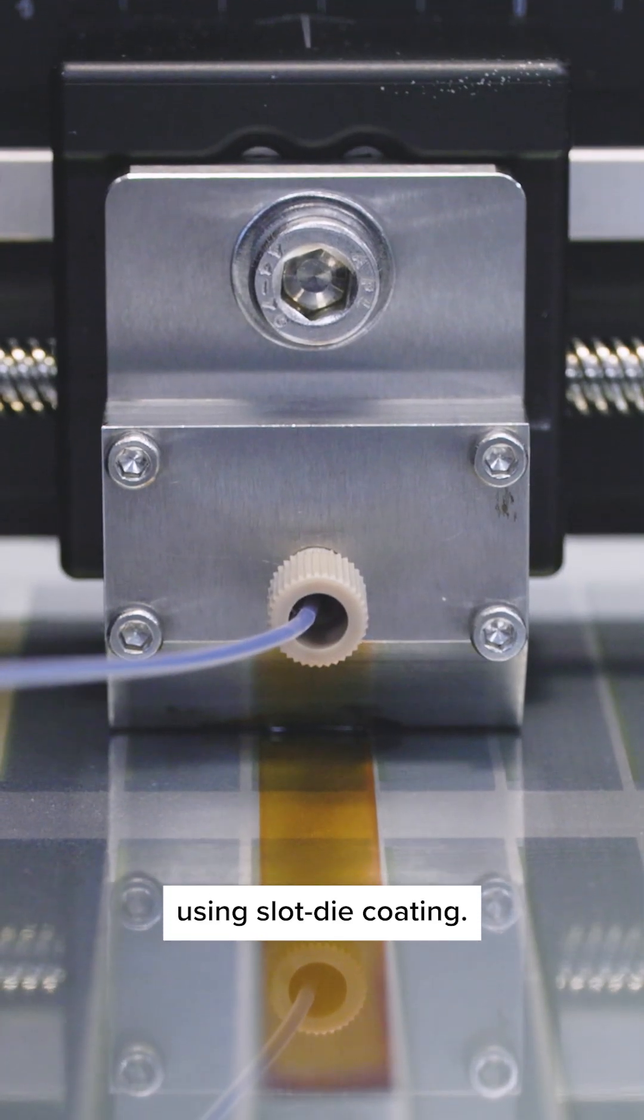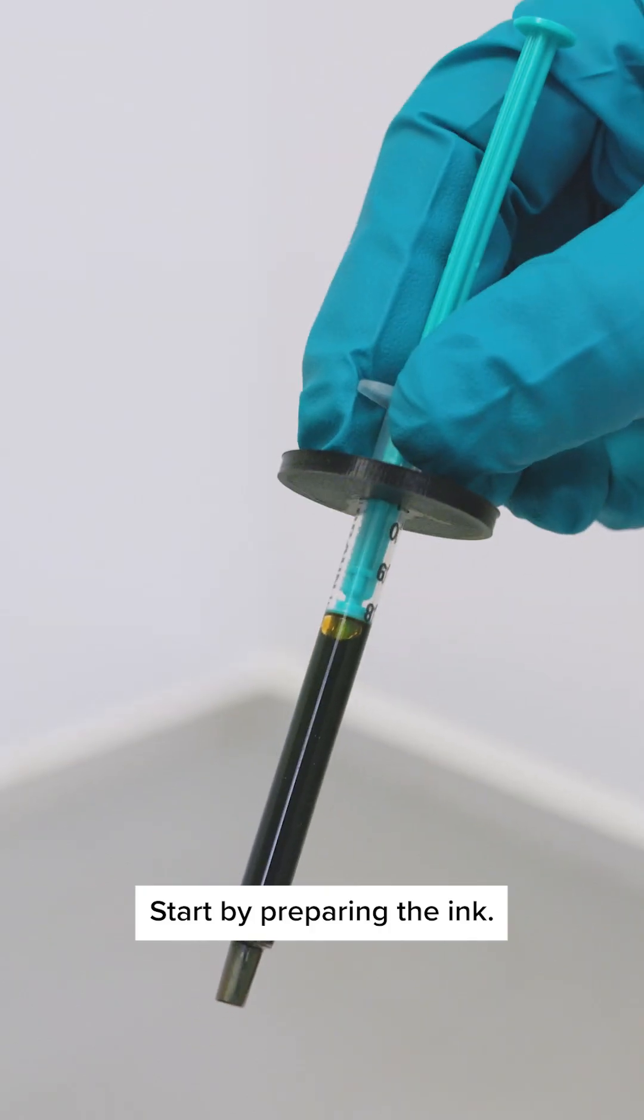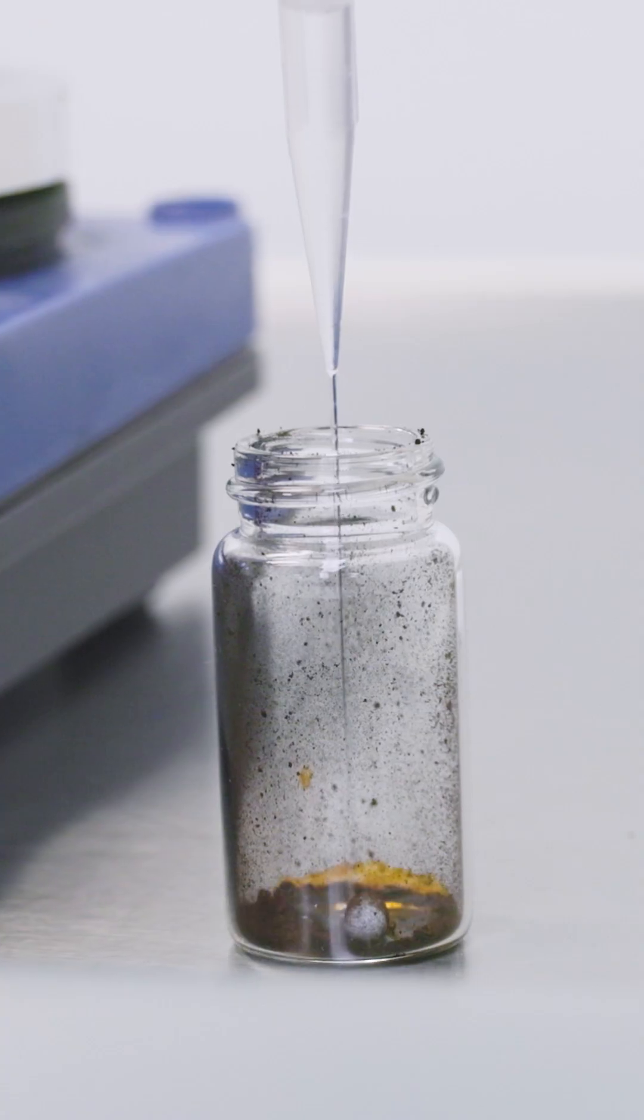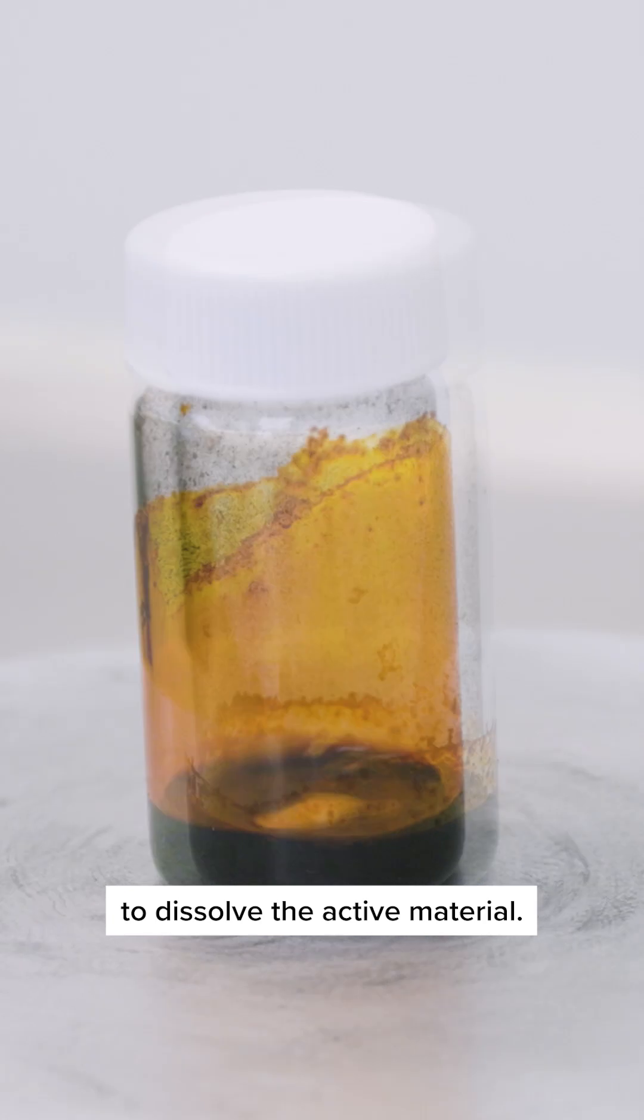How to make solar cells using slot die coating. Start by preparing the ink. Weigh off the active material, add solvents, and stir at elevated temperatures to dissolve the active material.